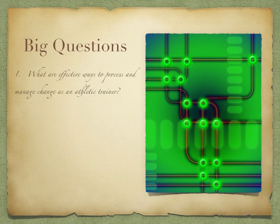So our first question is, what are effective ways to process and manage change as an athletic trainer? We are constantly changing the way that we provide athletic training care to our patients. This class will specifically deal with the administration side of change. I want to make sure that we focus on what are effective ways to make changes when change is right in front of us. There are some positive ways to do it, and there are some negative ways.